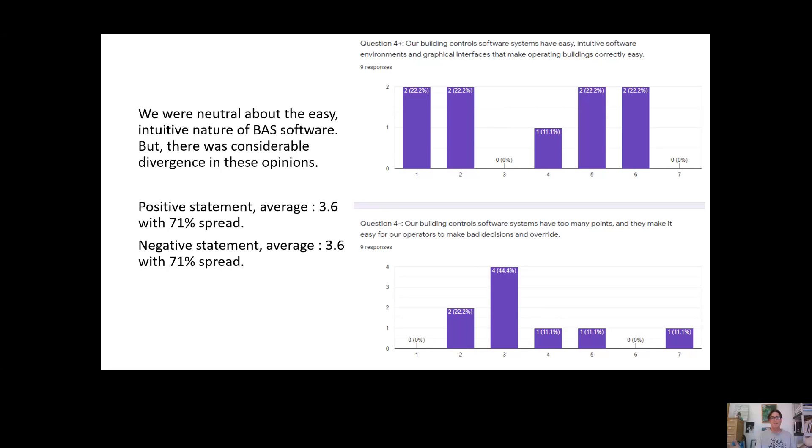So big spread and overall, this just basically means that we disagree on this, that among the nine people that took the survey, we just flat out disagree upon this, which is interesting. In an ideal world or where we should be going in the future, we should all strongly agree with this statement. Our building control system should have easy, intuitive software environments and graphical interfaces that make buildings operations easy. That should be the state of things and we should all agree with that. So there's some definite pointers to opportunities for growth here.